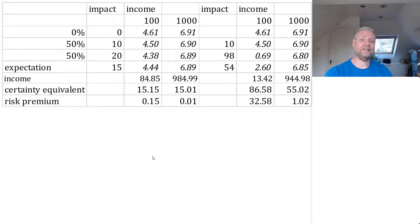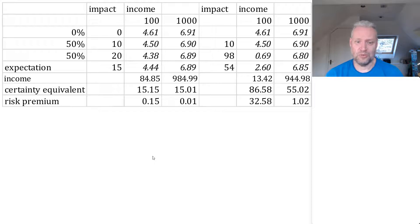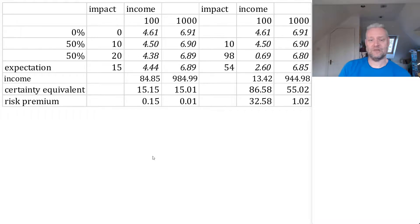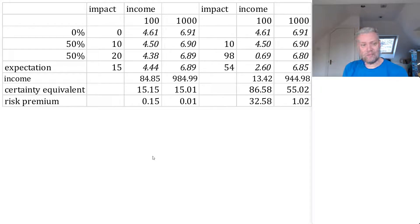Now let's re-evaluate everything but relative to an income of 100 rather than 1,000 — so the impacts have become 10 times as large relative to income. The log of 100 is 4.61, the log of 90 is 4.50, the log of 80 is 4.38. The expected utility after the impact is 4.44; taking the exponent gives an income of 84.85. The certainty equivalent damage is 15.15 and the risk premium is 0.15 — still about one-hundredth of the expected damage. It makes a bigger difference because the impact is relatively larger, but it still does not make a big difference.